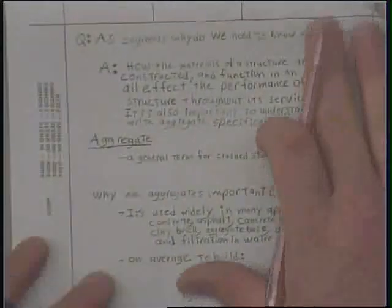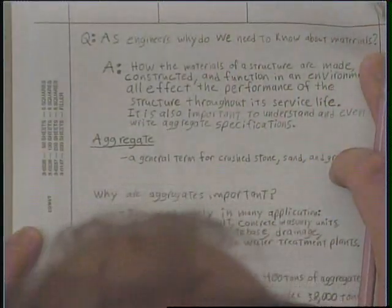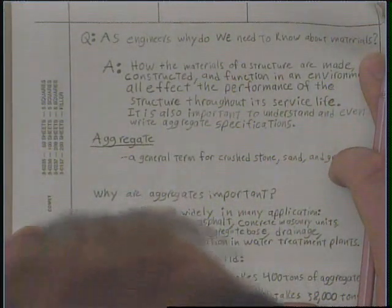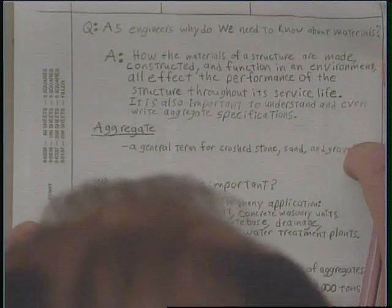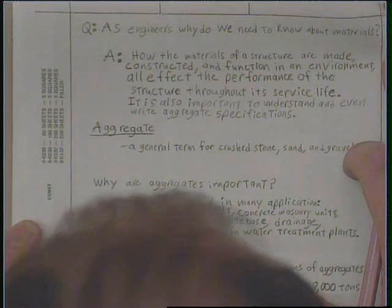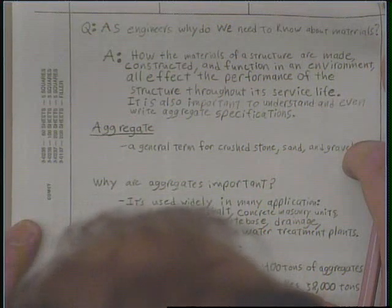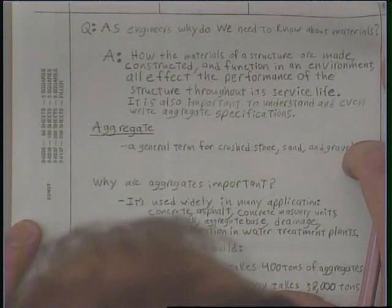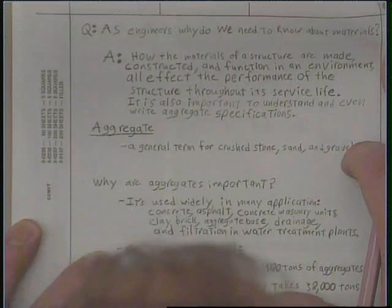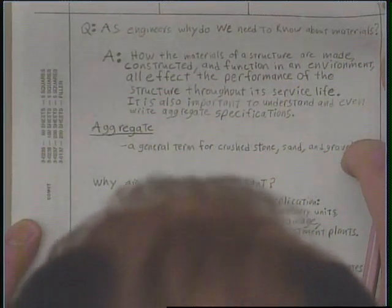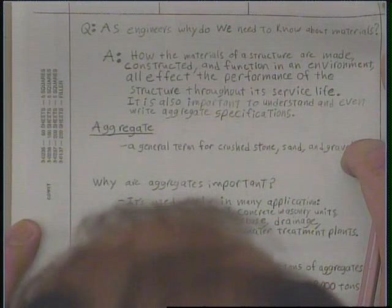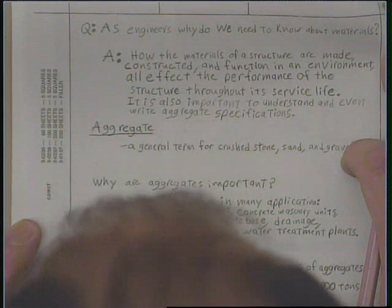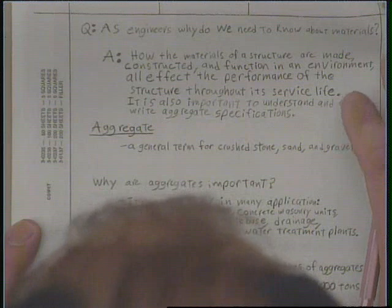As an engineer or contractor, why do we need to understand materials? Can we just specify anything? What you have to understand is how the material of a structure is made, constructed, and functions in an environment — all of these affect the performance of the structure throughout its service life. That's a huge concept, and it's very important to understand and to specify requirements for a certain area.